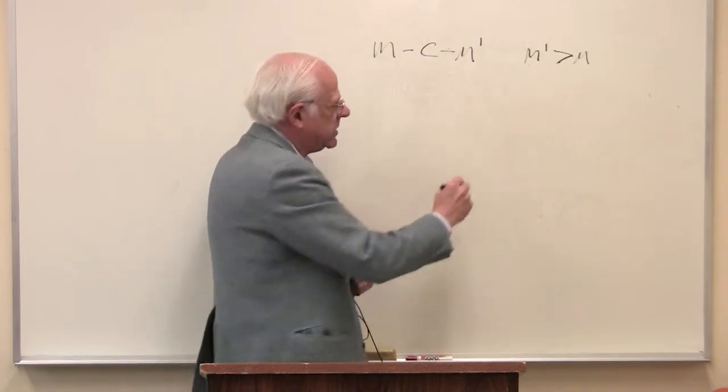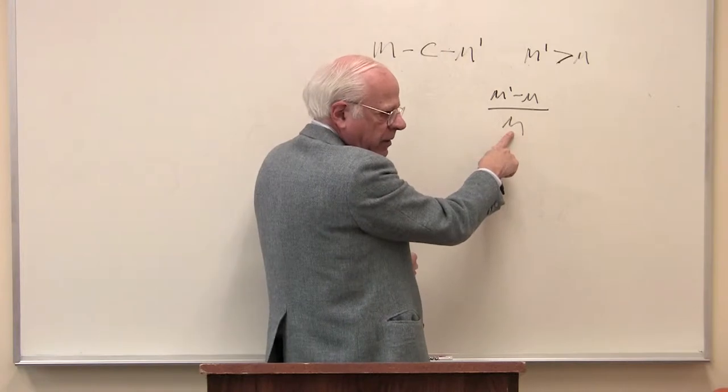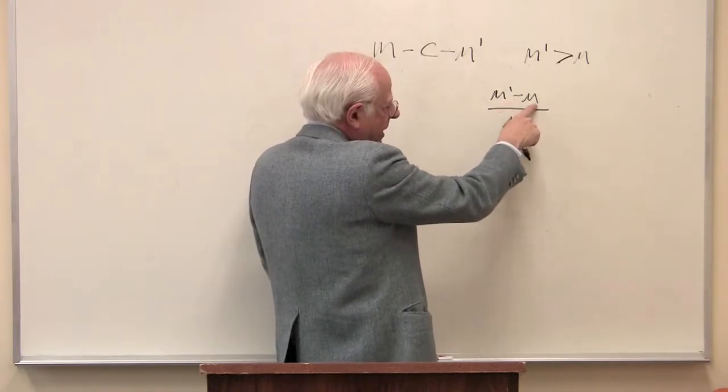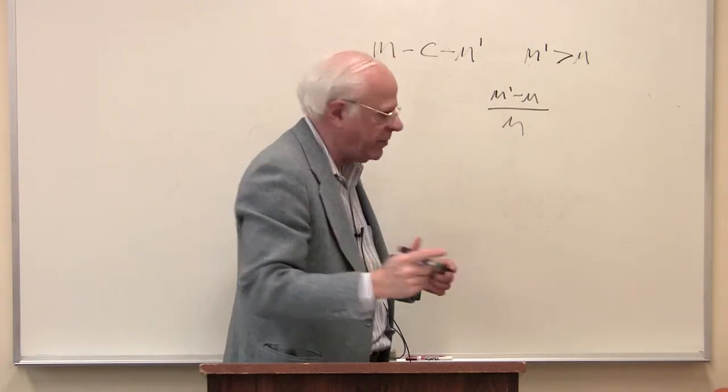So a successful capitalist has expanded his or her value. And you can now have a measure of this. That is, M prime minus M over M, where you started M, where you end up M prime minus M. That's an index of how successful the capitalist is in expanding his or her money.